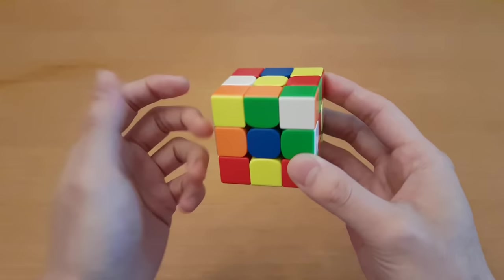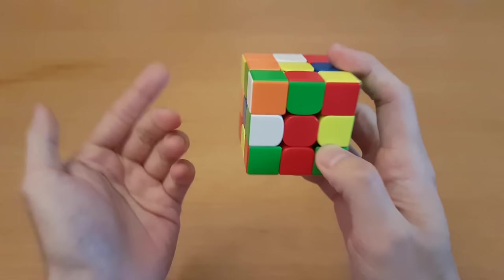Number 1, find all the cross pieces before you start solving. When an advanced cuber looks at the scrambled cube, they will always find all of the cross pieces before starting their solve, and then just solve all of them at once.